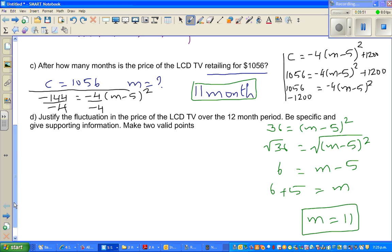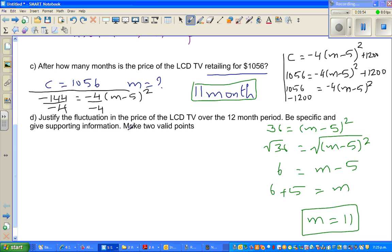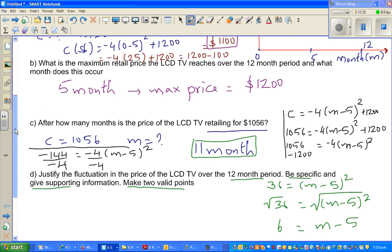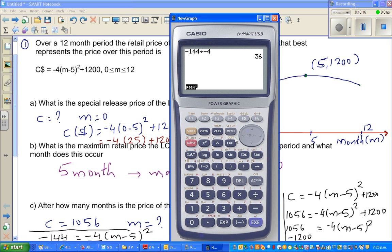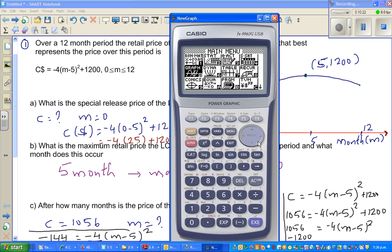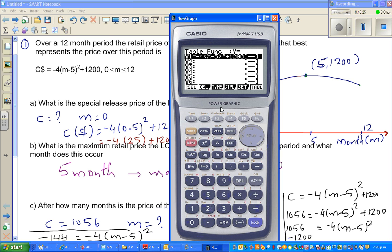Now the last question is where you have to make some statements. Justify the fluctuation in the price of LCD TV over 12-month period. Be specific in giving supporting information. Let me go to table and see what happens after 12 months.